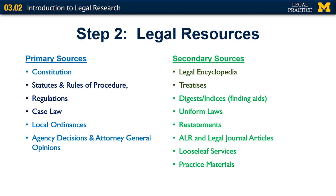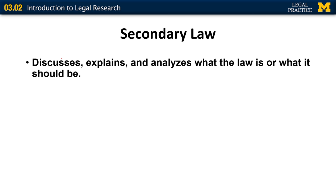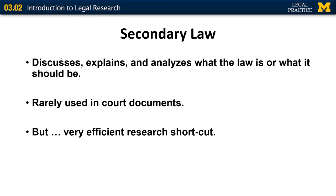Secondary sources discuss the law, and they include things like encyclopedias, uniform laws, restatements — some of the things you've likely already seen in law school classes. Secondary sources discuss, explain, or analyze what the law is or what it should be. And although they're rarely used in court documents like briefs, they are an incredibly useful and efficient research resource.